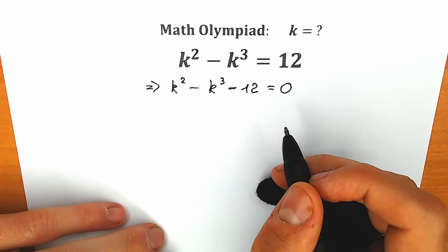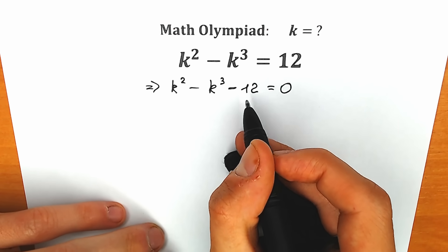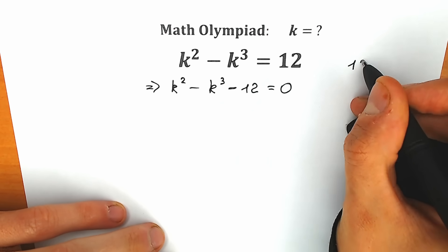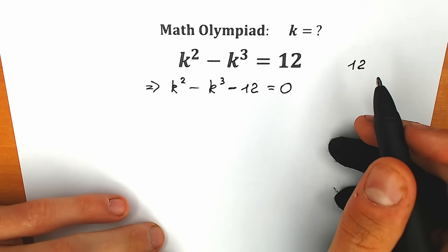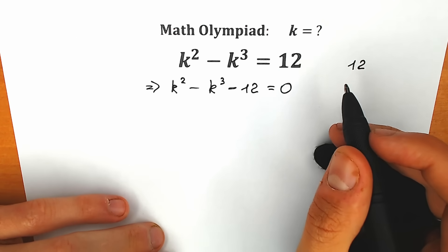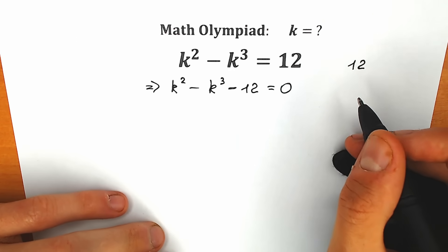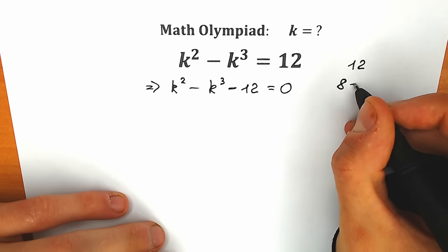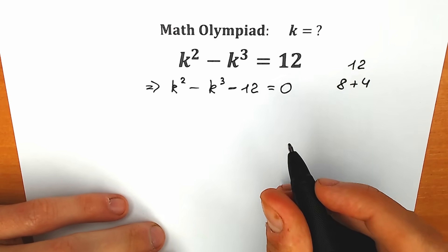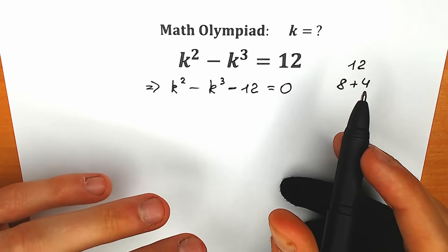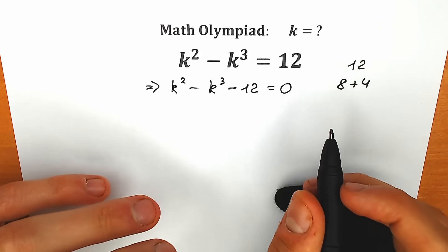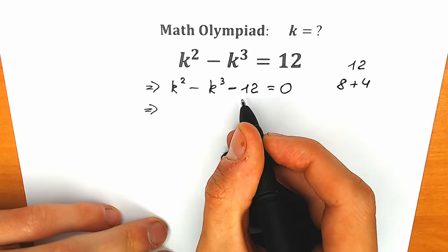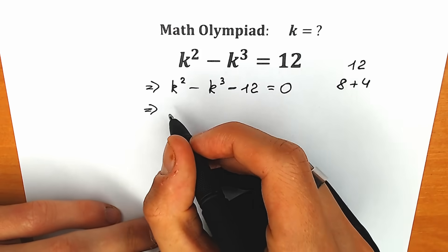What are we going to do next? This 12 we can write as a sum of two constants. We can write this 12 in a lot of ways — 6 plus 6, or 1 plus 11 — but the best way to express this 12 is to write it as 8 plus 4. In a few seconds I will explain why. So let's express this 12 as 8 plus 4.